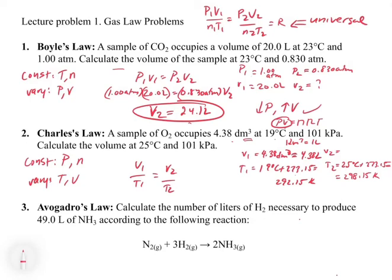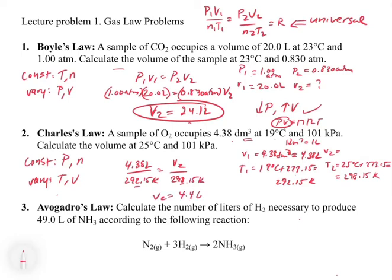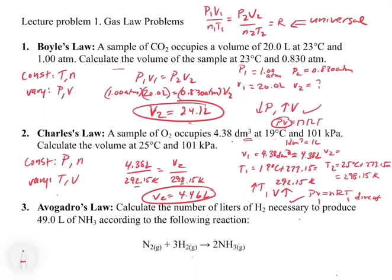Plugging in: 4.38 liters divided by 292.15 Kelvin equals V2 divided by 298.15 Kelvin. Solving for V2 gives 4.46 liters. As a check: we increased the temperature, and since volume and temperature have a direct relationship in PV = nRT — they're on opposite sides of the equation — the volume should go up. It does, going from 4.38 to 4.46 liters. This shows how to work empirical gas law problems using the universal gas law.